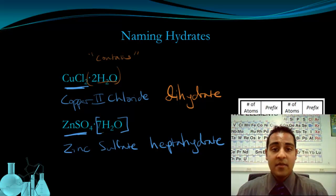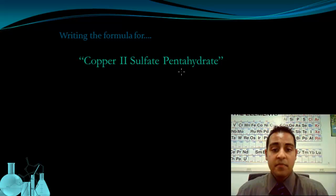Now that we've seen how to name the hydrate, writing the formula for a hydrate given the name is going to be a fairly straightforward task. So here we have copper 2 sulfate pentahydrate. The first part of this is the name of the ionic compound, which we're going to treat like any other ionic compound.